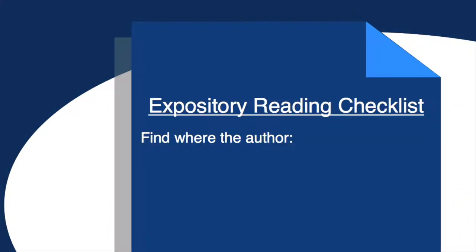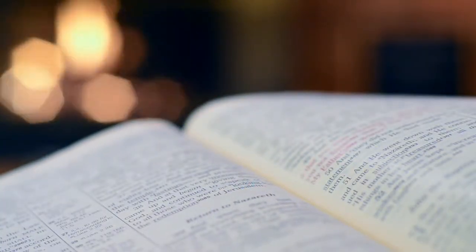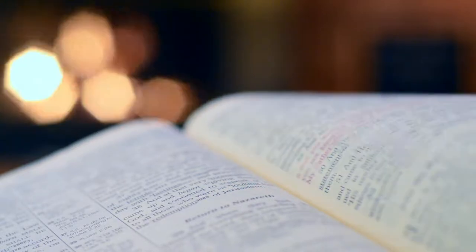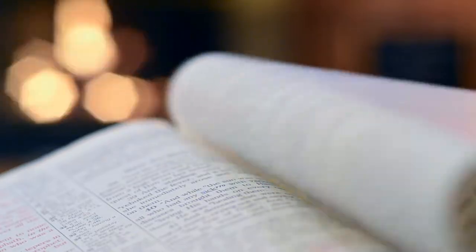By the time you finish looking at and through the book, you're well prepared to accomplish the initial tasks of reading an expository work — to find where the author explains the idea, demonstrates support, and interprets the idea. You're also in a great place to evaluate the goals you made when thinking about the book, your personal reasons for reading Fides et Ratio, and find where in the book you'll best accomplish those goals. An analogy that fits well here is given by Adler and Van Doren in How to Read a Book: the analogy of playing catch.